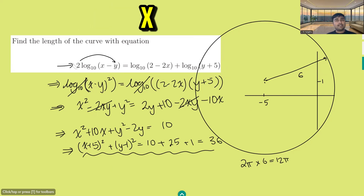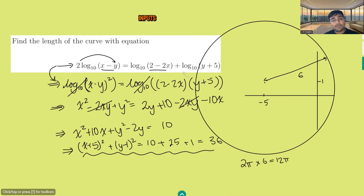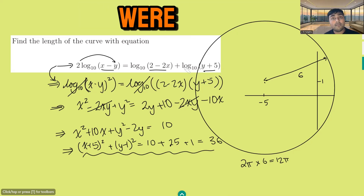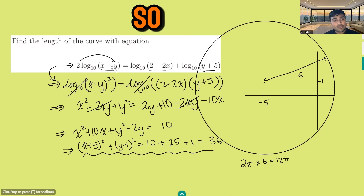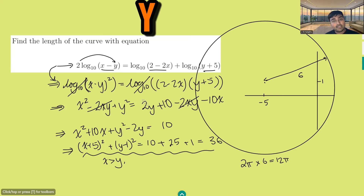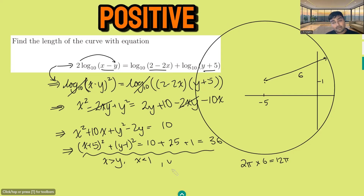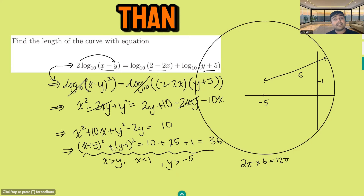How do we know which x, y values to select? All of the algebra was done under the premise that all inputs of the logarithms were positive. So we need to check: x minus y is positive (i.e. x is greater than y); 2 minus 2x is positive (i.e. x is less than 1); and y plus 5 is positive (i.e. y is greater than minus 5).